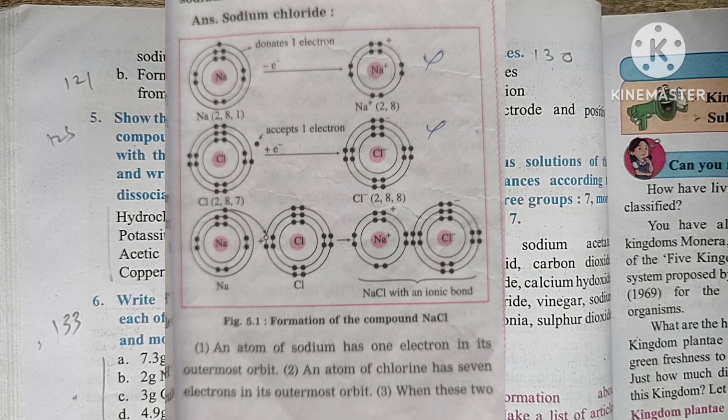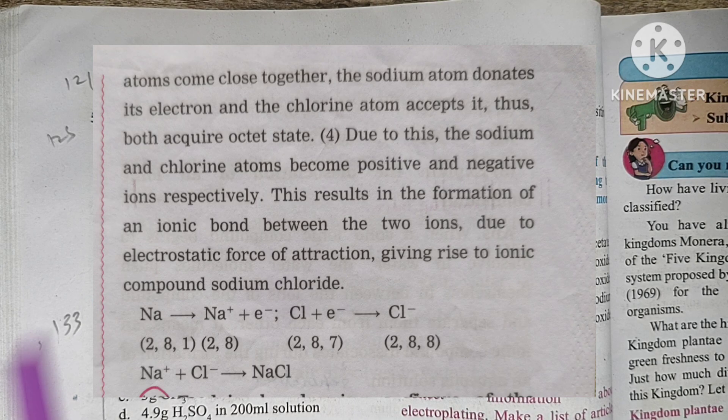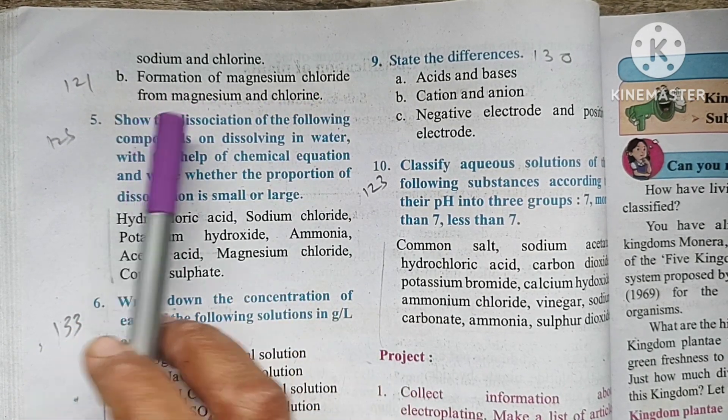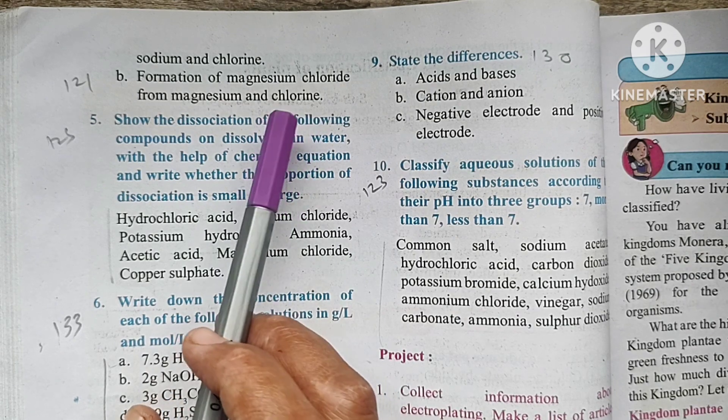Part B: Formation of magnesium chloride from magnesium and chlorine. This is the answer here.